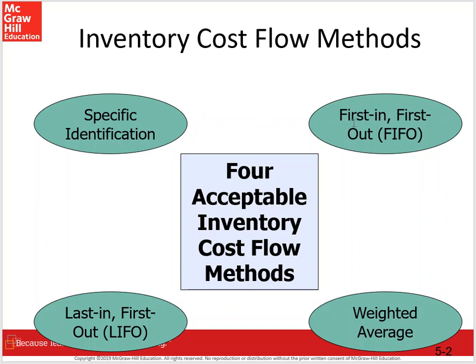Then we have FIFO, which is short for first in, first out, meaning if we buy A, then B, then C, we assume that we're selling A, then B, then C chronologically. Then we have LIFO — last in, first out — so if we buy A, then B, then C under LIFO, we assume we're selling C, then B, then A, in reverse order. And finally, weighted average, where we compute a mathematical average and use that for our cost of goods sold and inventory per unit.